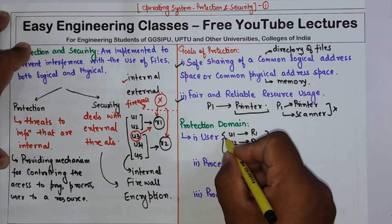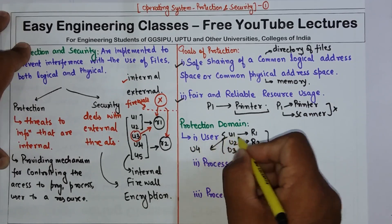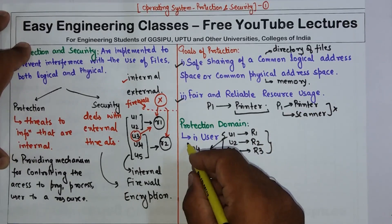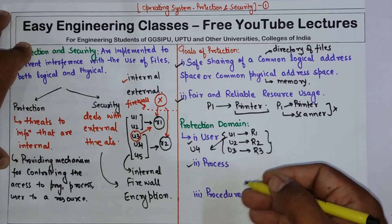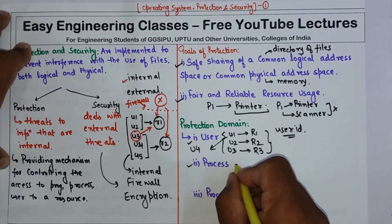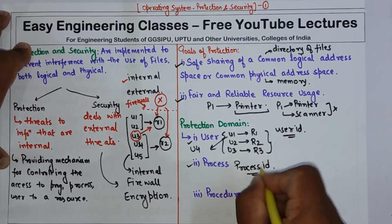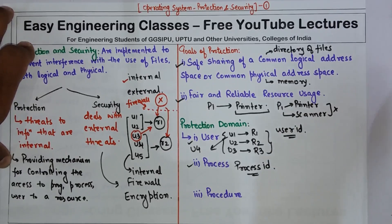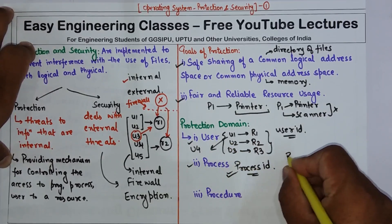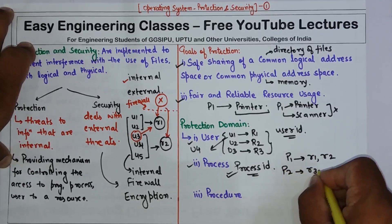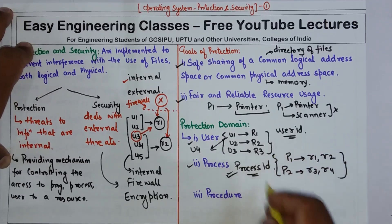If user U1 is changed to user U4, we are switching the domain from U1 to U4, so domain switching may occur. A process can also be a domain. Similarly to using a user ID as the identifier, in this case the process ID is used as the identifier, and each process is like a domain. The resources that can be accessed depend on the identity of the process, determined by the process ID. For example, process P1 can access R1 and R2, and process P2 can access R3 and R4.